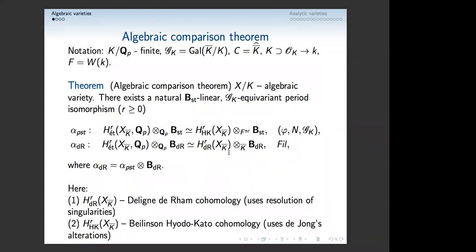The de Rham cohomology we take, because we have such a general situation, is the one of Beilha — it uses resolution of singularities in its definition. This de Rham comparison is compatible with the Hodge filtration on everything. The Higgs-de Rham structure is a bit more complicated; it's defined by Beilinson. It uses de Jong's alterations to reduce everything in h-topology to semi-stable schemes, and it will have Frobenius, monodromy (which is nilpotent), and action of G_K. But this action is smooth — the stabilizer of every vector is an open subgroup of G_K. You can think of it as being the extension you have to make to get potentially semi-stable reduction.